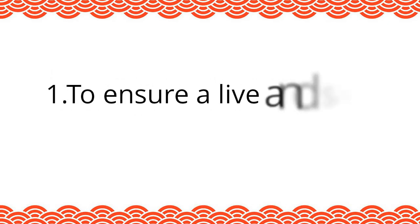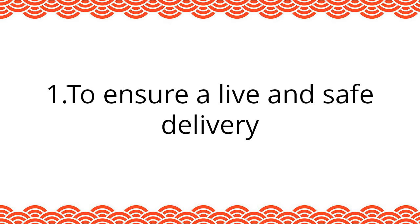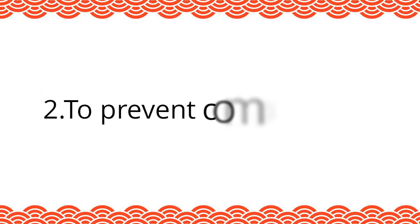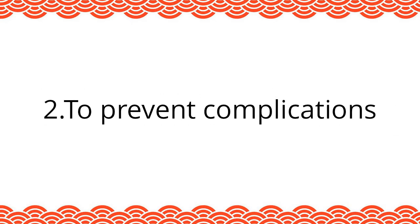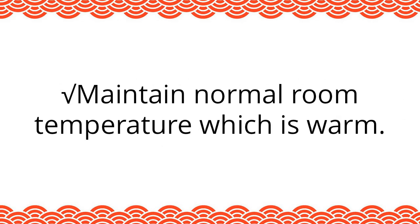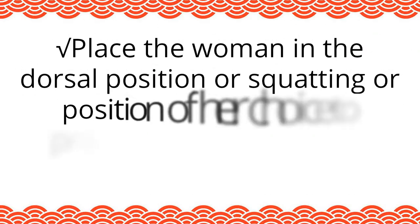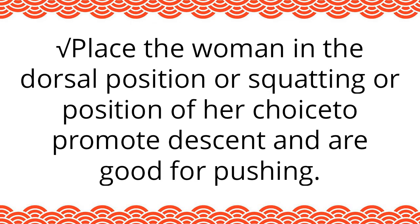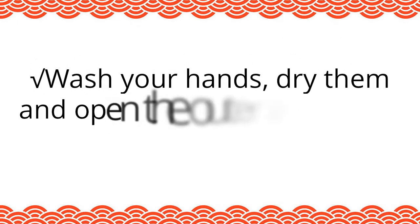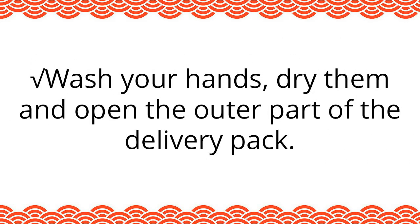Management of the second stage of labor. Aims: one, to ensure a live and safe delivery; two, to prevent complications. Preparation for delivery: maintain a normal warm room temperature. Let the woman empty the bladder, or pass a catheter if she is unable to pass urine, to prevent delay of the second and third stages and to prevent rupturing the bladder. Place the woman in the dorsal position, squatting, or a position of her choice to promote descent and facilitate pushing.